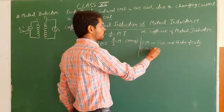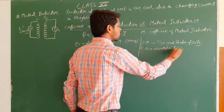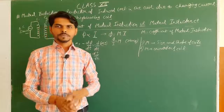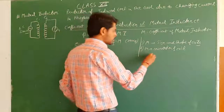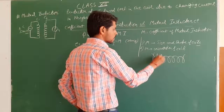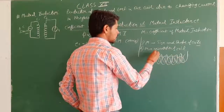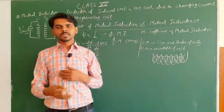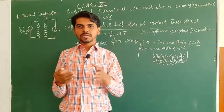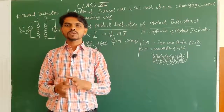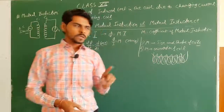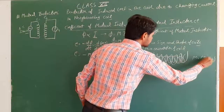The second factor is the orientation of the coils — how the coils are placed with respect to each other. M will be maximum when one coil is wound over another coil, because all the magnetic flux from the inner coil passes through the outer coil, so maximum flux is linked. The more magnetic flux passes through, the higher the coefficient of mutual induction.